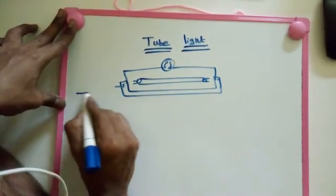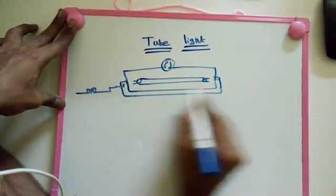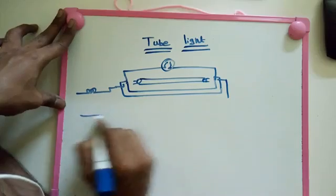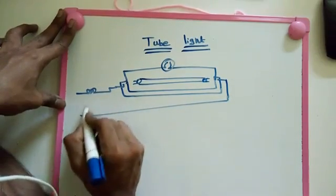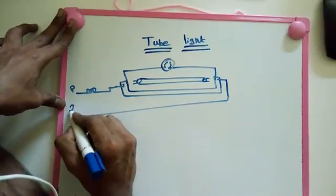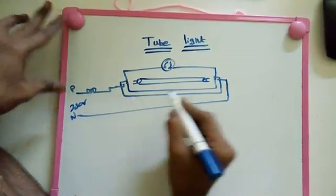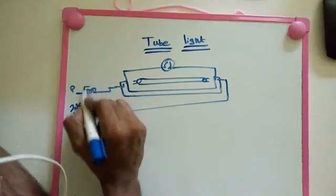Then here we have choke, then we have neutral directly. So this is the connection of tube light. Phase and neutral, 230 voltage here. So this is a simple connection.